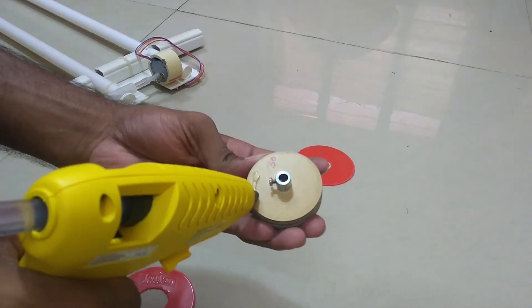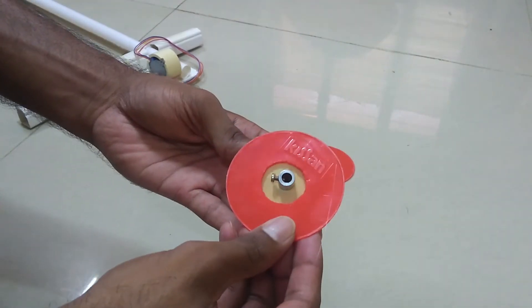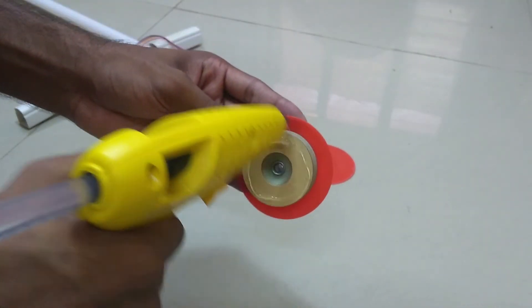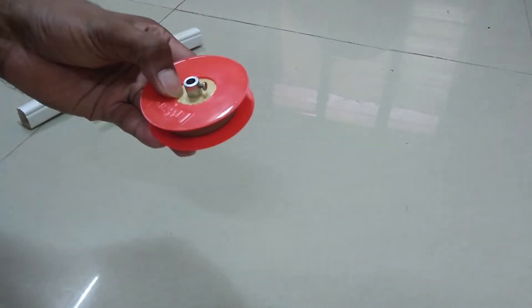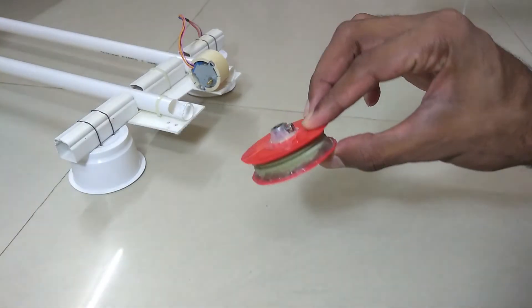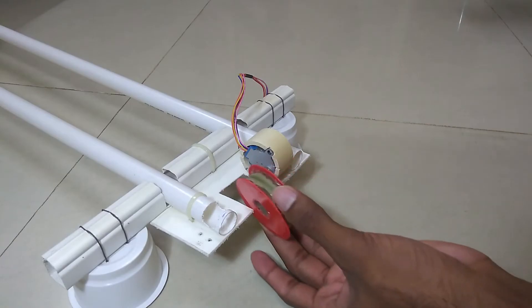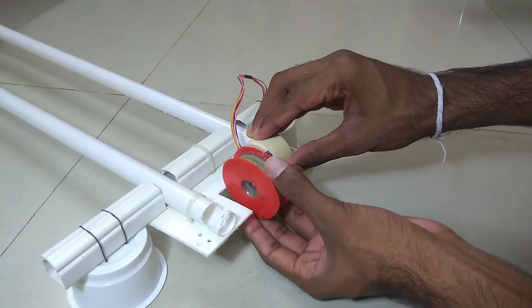Next take the pulleys and paste 2 plastic plates on both sides. After that take one of them and fix it to the motor shaft.